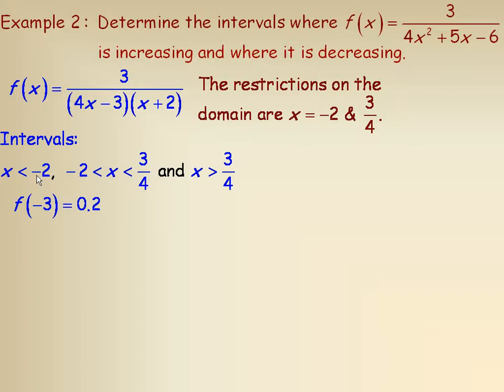I'm going to take a couple of x values in each interval to analyze the slope. They'll actually be secants, but with x values so close together they approximate how a tangent would look. I'll take x = −3, which is below −2, substitute into the function, and get a y value of about 0.2.